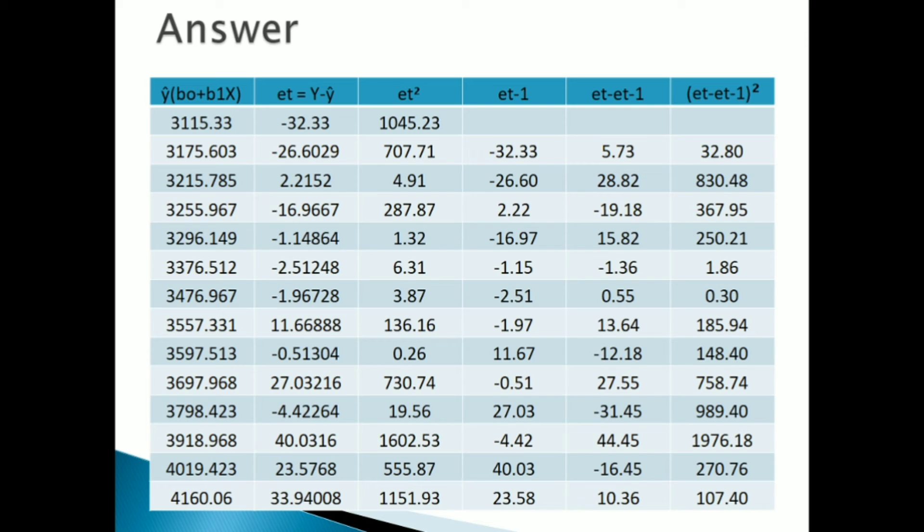The fourth column is ET minus 1. For this column, you just leave the blank in the first row. In the second row, you just take it out from your second column first value. You put it in your second row to get your ET minus 1.